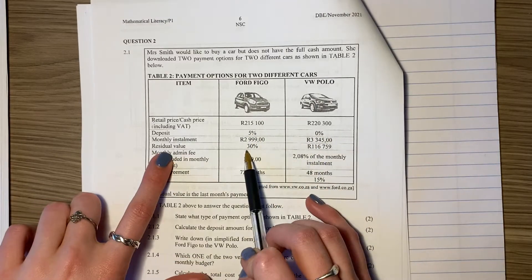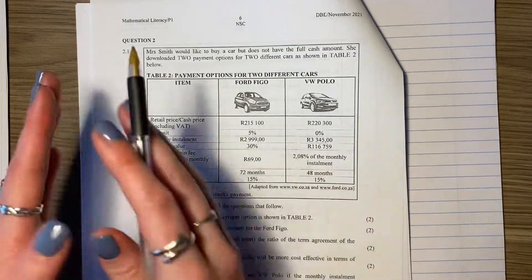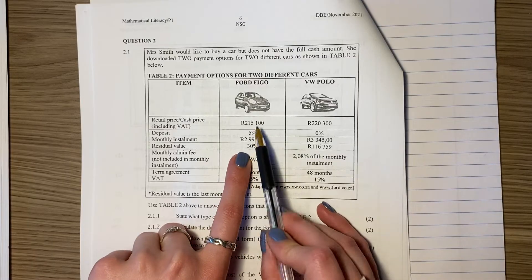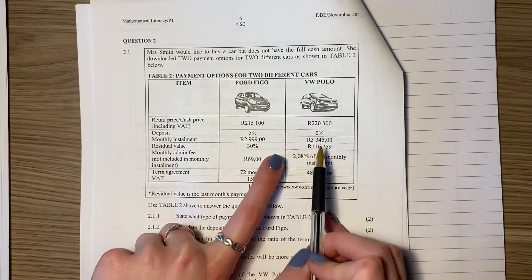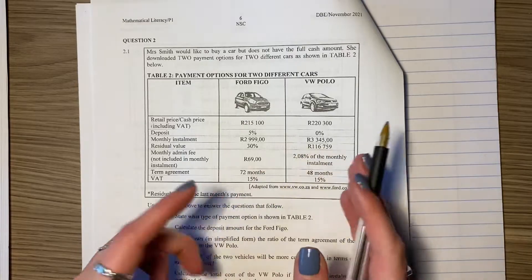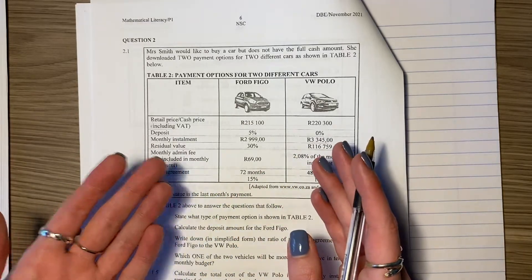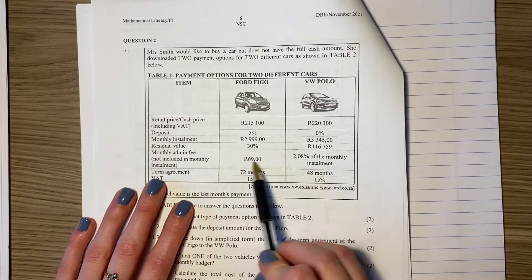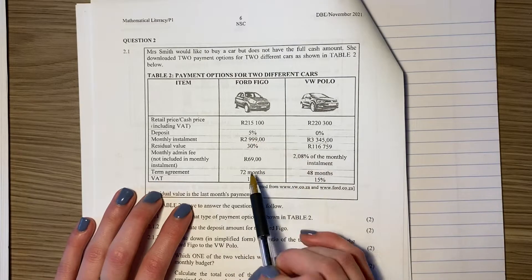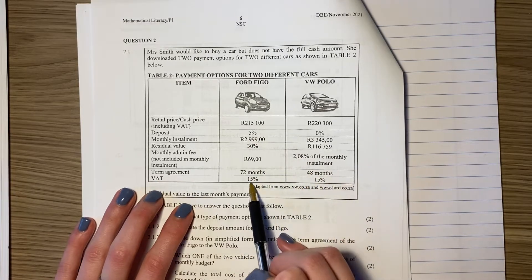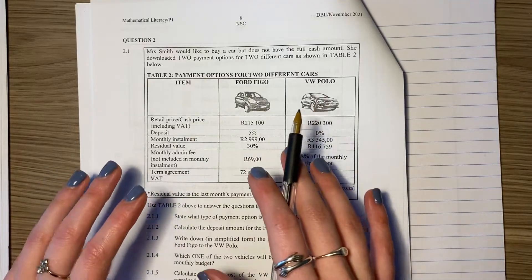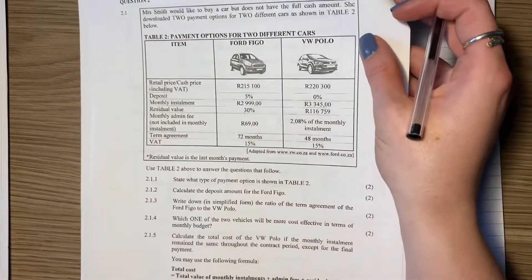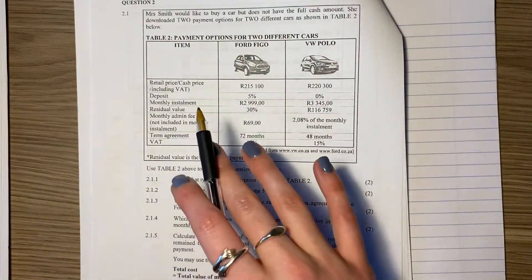You have monthly installments, then this residual value. Basically what that means is you pay these monthly installments for these different periods of time and at the end you have to pay this off. So 30% of that you have to pay off at the end, which is sometimes quite a lot. Since people don't often understand these, they get themselves into debt, but that's another story. Then the monthly admin fee that's added to that, on top of the monthly installments. Don't get hung up on the detail. Remember I always say, go straight into the questions and they often help you steer to where you need to be with regard to understanding the scenario.